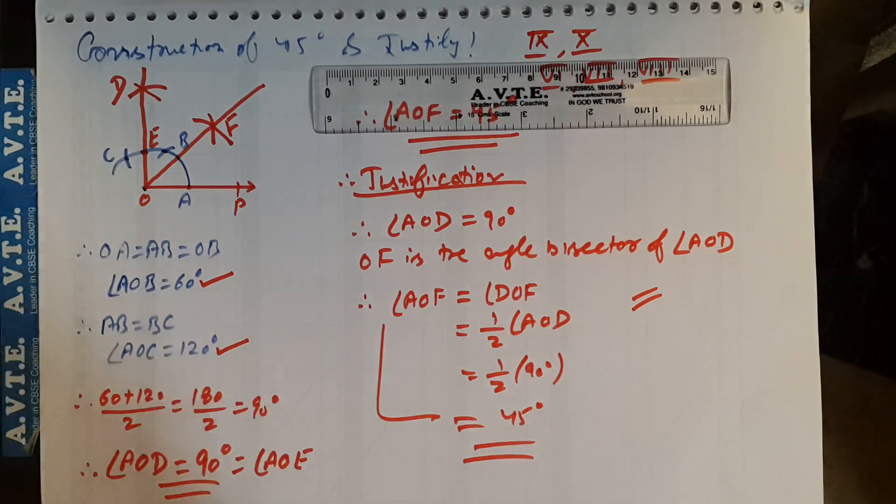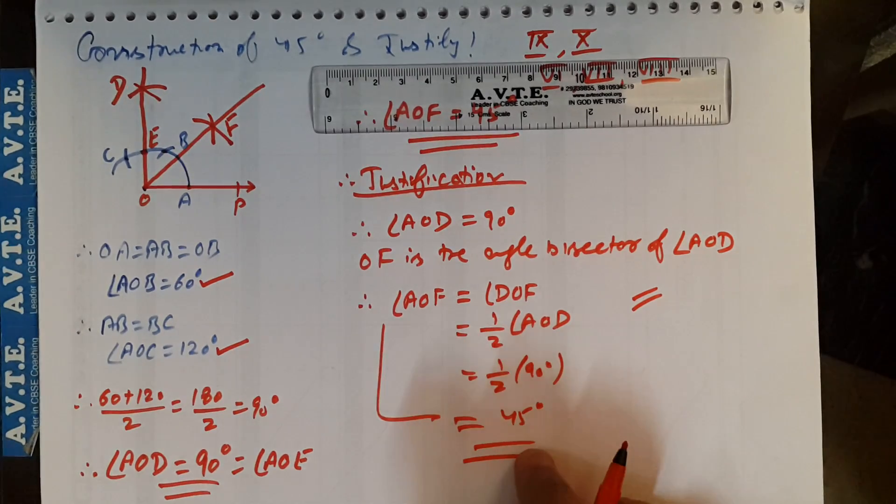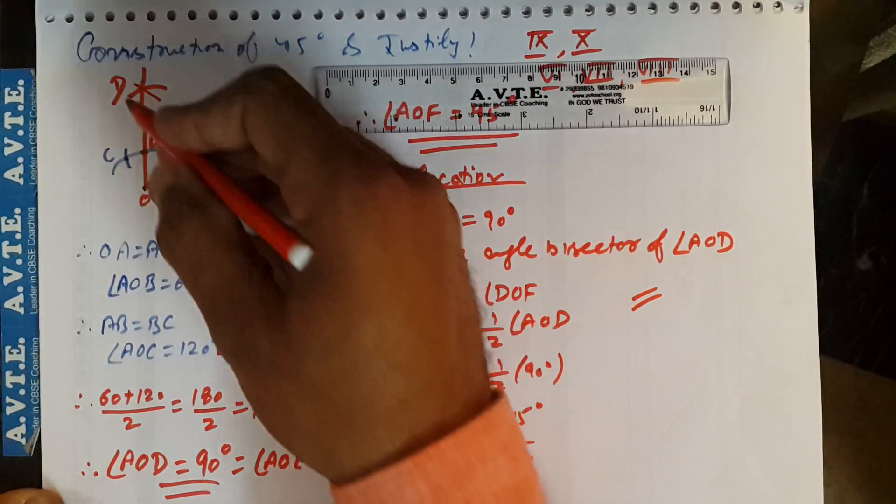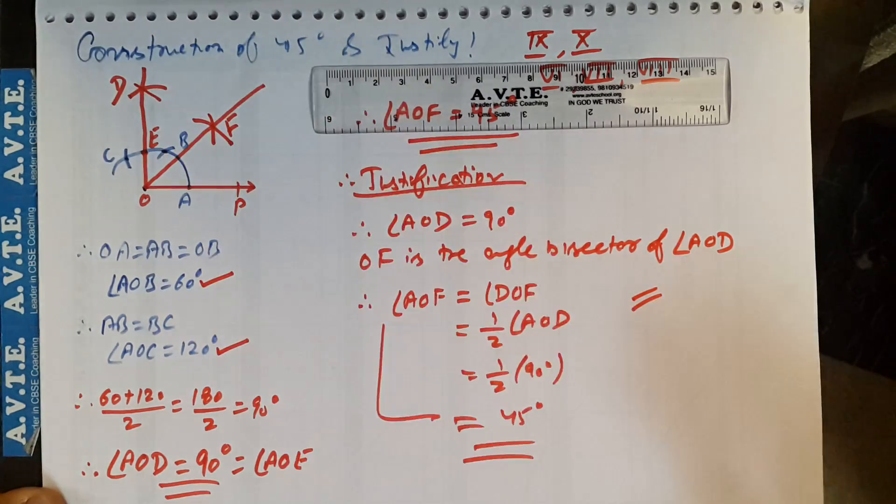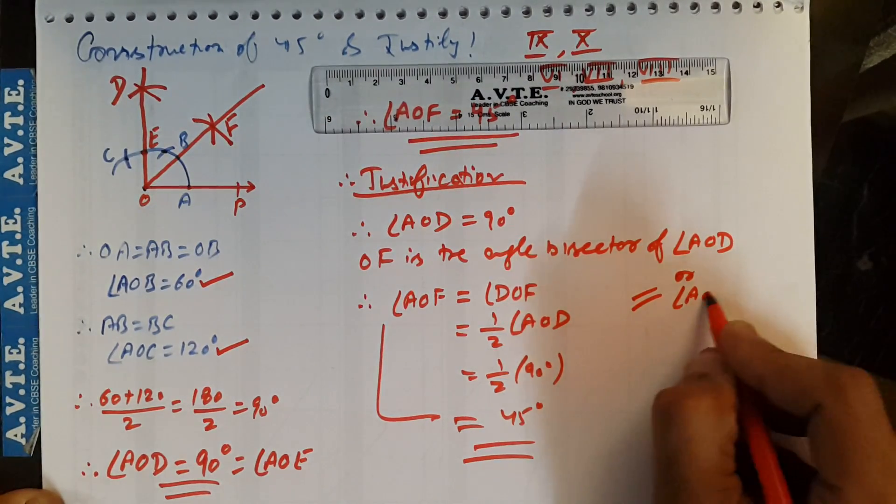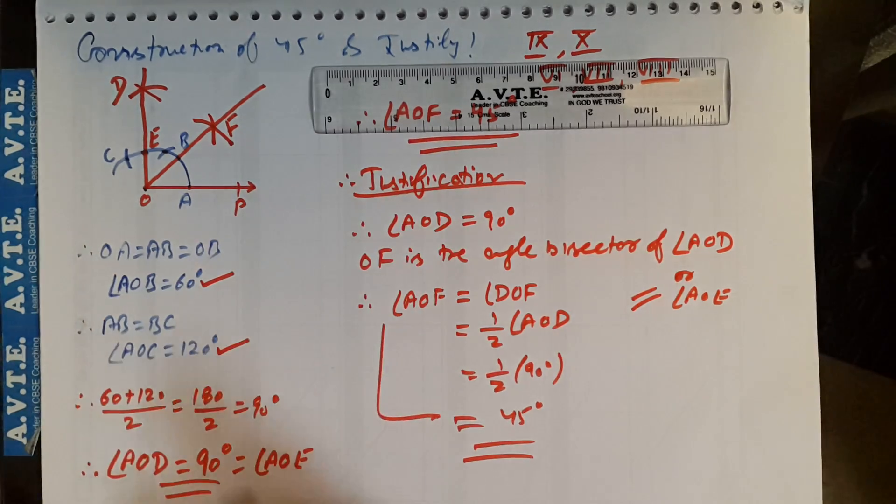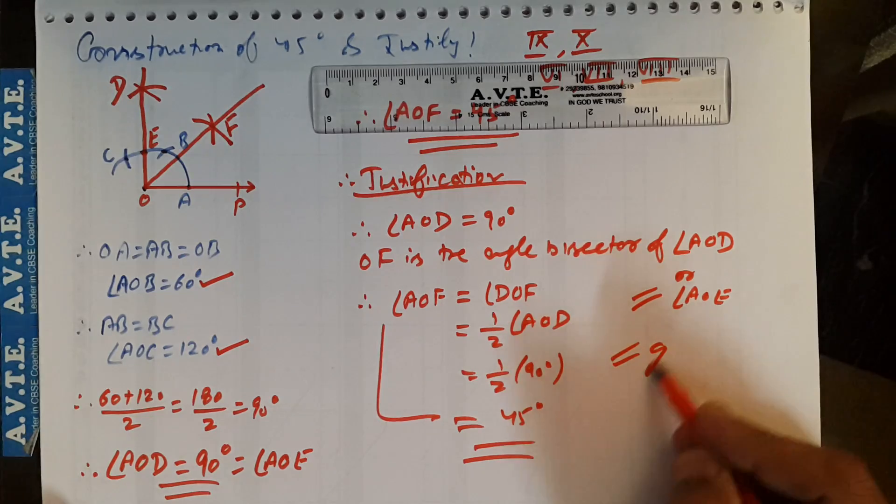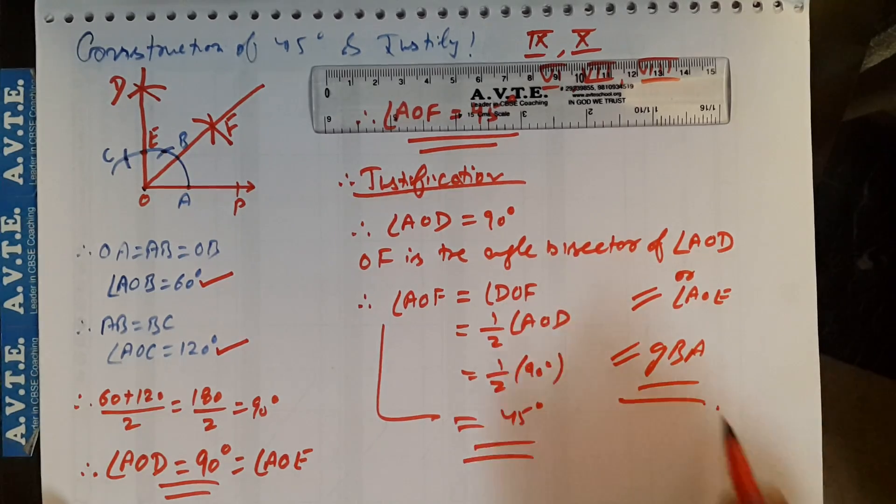I got this as a conclusion that OF is the angle bisector of AOD or AOE, which is the same thing. AOD or AOE, because we marked AOD as AOE. I hope you understood this question. God bless you all.